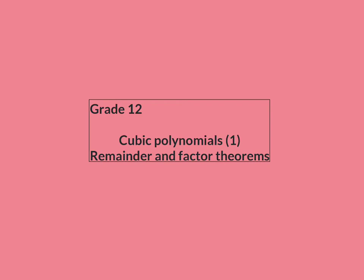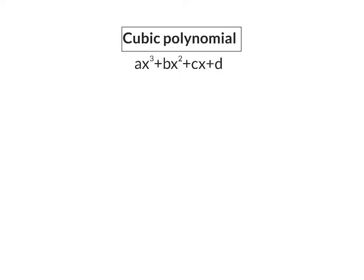In our first lesson on cubic polynomials, we are going to have a look at the remainder and factor theorems. The standard form of a cubic polynomial is ax cubed plus bx squared plus cx plus d.